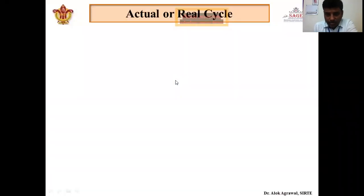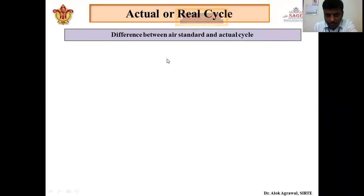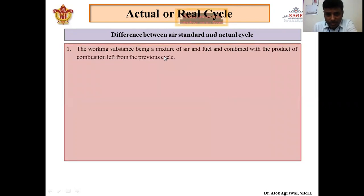So first we will start with the actual or real cycle. What is the difference between the actual and the ideal cycle? There are various differences between the two. The first is the working substance — in the air standard cycle we consider that the working fluid is only air, but in the actual cycle it is a combination of air and fuel.